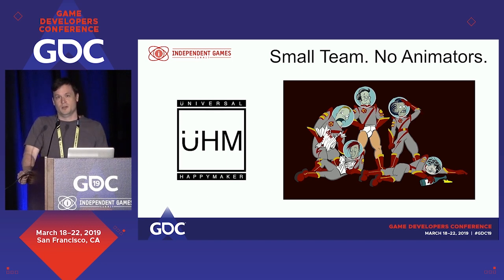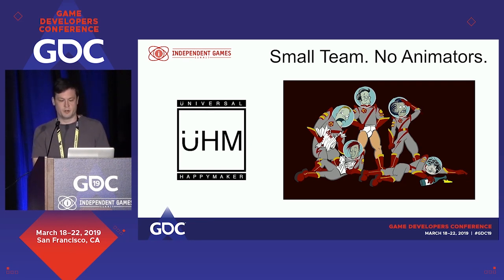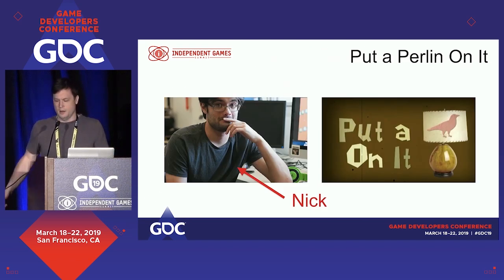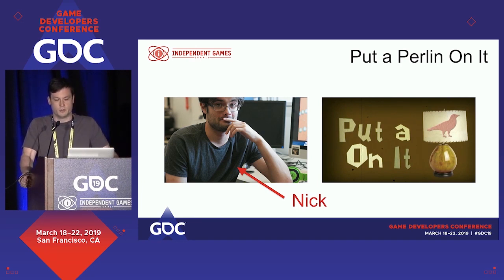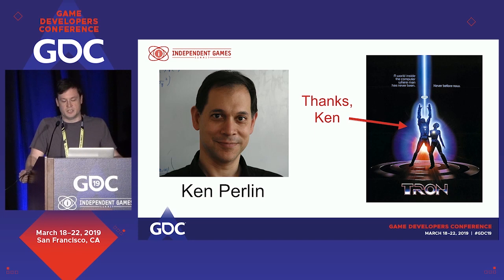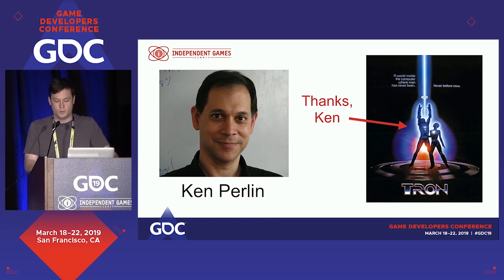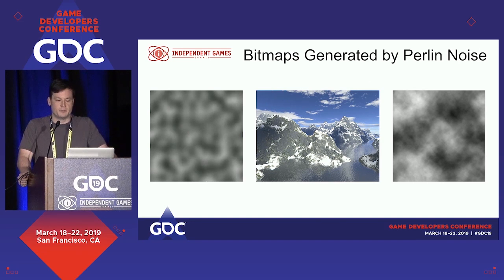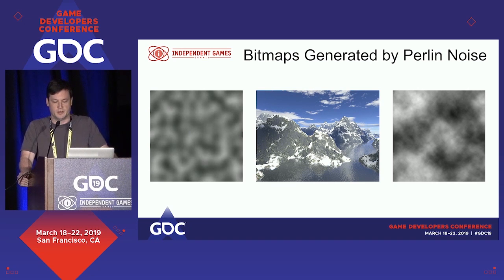Why Perlin noise for animation? There are lots of ways to animate things, but basically we're a small team without anyone who can dedicate time to keyframe animation, and we still wanted our game to look great. I remembered my friend Nick Crockett told me years ago that if you want your game to look good, you put some Perlin on it. Perlin noise is an algorithm Ken Perlin thought up in the 1980s to make procedural textures for the movie Tron — which won an Academy Award. On the left is a basic Perlin noise generated bitmap, on the right is a fractal extrapolation you might have seen in Photoshop, and in the center is a 3D rendered landscape based on Perlin noise type algorithms.